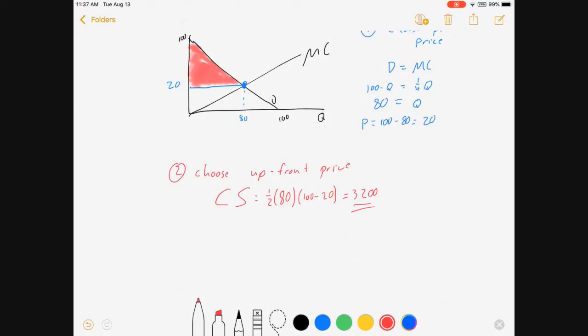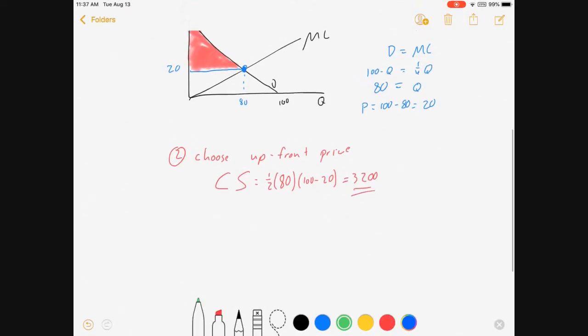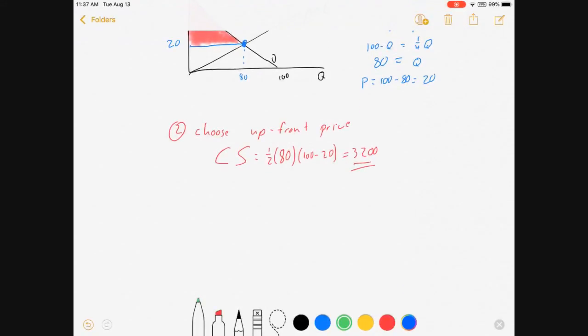So this two-part tariff, what would it look like in the end? It would be the upfront price equal to 3200 and the per unit price of 20. And so what would happen to the individual? They would buy 80 units of the good for $20 each after paying this $3,200 startup fee.